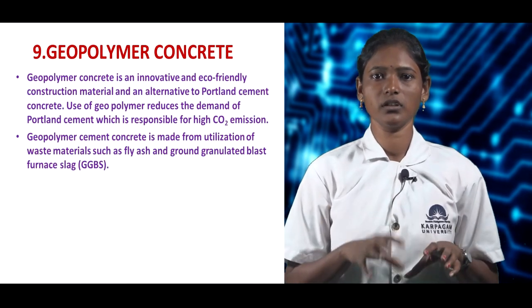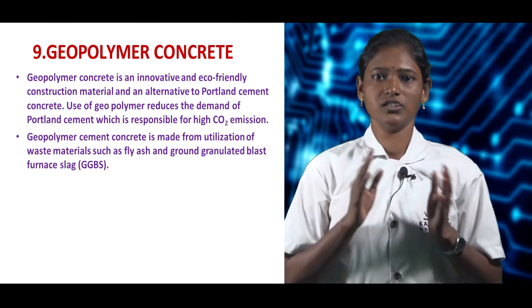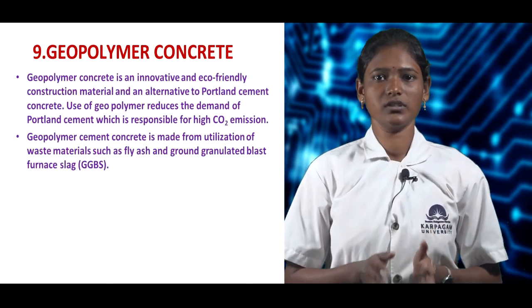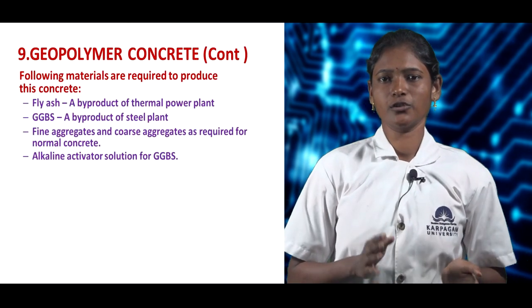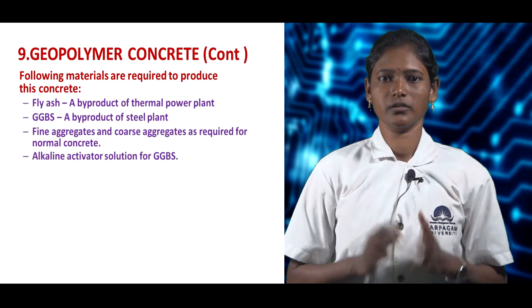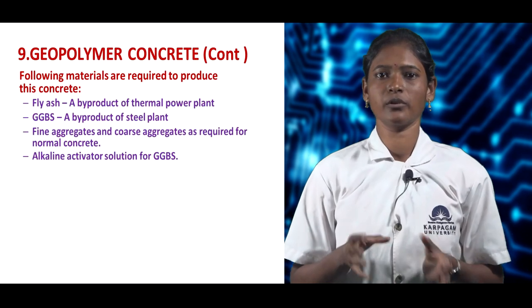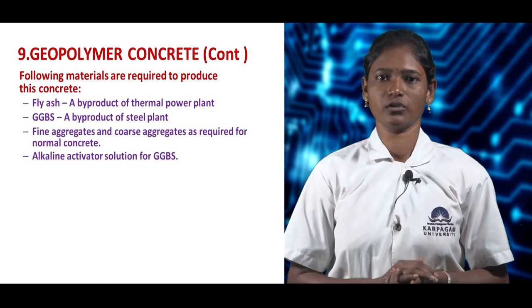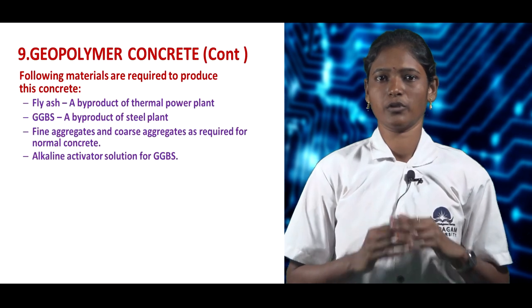Geopolymer concrete is an eco-friendly concrete in which Portland cement is replaced by geopolymer materials such as GGBS and fly ash, which reduces CO₂ emissions that occur in Portland cement production. Materials used in geopolymer concrete include fly ash, a byproduct of thermal power plants; GGBS, a byproduct of steel plants; fine aggregate; coarse aggregate; and an alkaline activator solution.